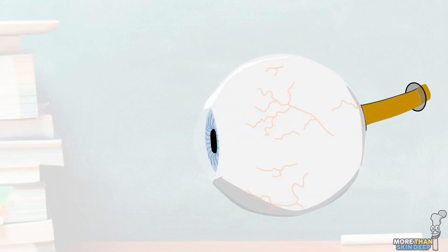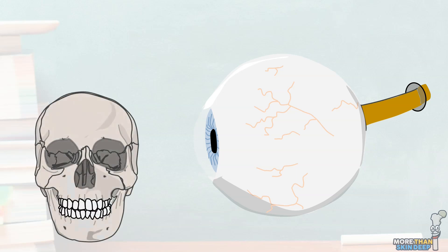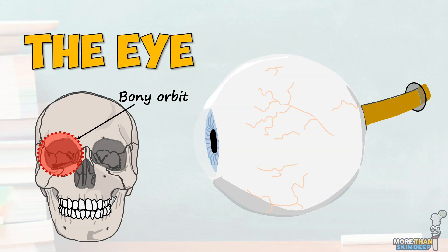The human eye is a specialised sensory organ. Humans have two eyes, which are situated on either side of the face, within bony cavities called the orbit. Despite being a relatively small organ, there is more to its anatomy than meets the eye. This incredible sensory organ receives light signals and converts them to nerve impulses, allowing us to perceive colour, depth and movement. Today, we'll have a look at an overview of the basic anatomy of the eye. My name is Dr Anna Blake and this is More Than Skin Deep.